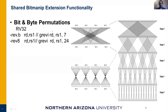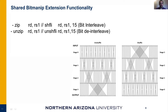We have bit and byte permutations where we apply the generalized reverse operation — the first three stages and last two stages — where we can reverse the bit order of each byte or reverse the byte order in a 32-bit register. We have zip and unzip instructions where we apply all stages of unshuffle for unzip and shuffle for zip. This shuffle instruction is described in the bit manipulation instruction set.